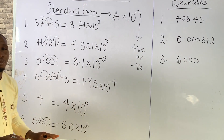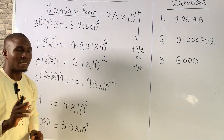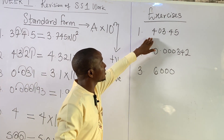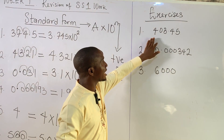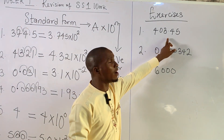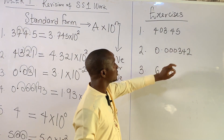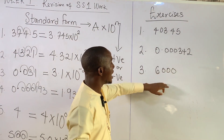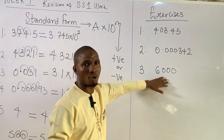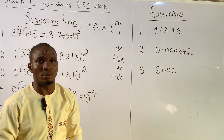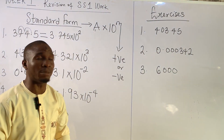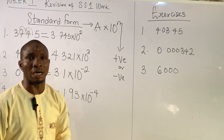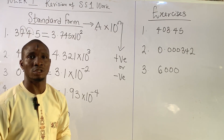So these are the examples on standard form. Let me give you some exercises to try. Express 403.45 in standard form, and also try to express numbers 2 and 3 in standard form. With this explanation, you should be able to express these numbers in standard form — this has been a revision of the standard form. Thank you so much.